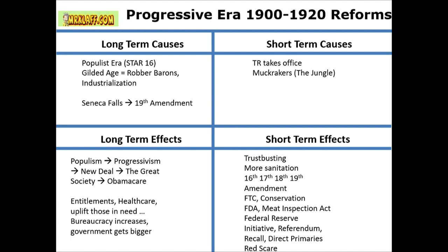Short-term causes of the Progressive Era: Teddy Roosevelt takes office in 1901 after the assassination of McKinley, then you get the Muckrakers. You have The Jungle, How the Other Half Lived by Jacob Riis, Ida Tarbell helping break up Standard Oil, Lincoln Steffens, and Ida B. Wells. Short-term effects include a lot of Progressive Era reforms — the FDA, the FTC, conservation — even the Red Scare is a short-term effect.